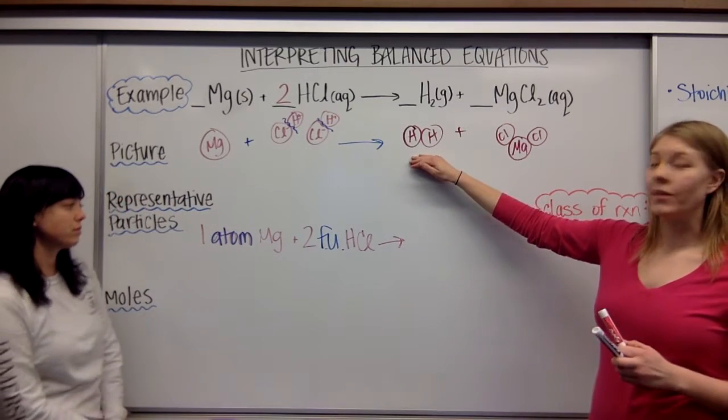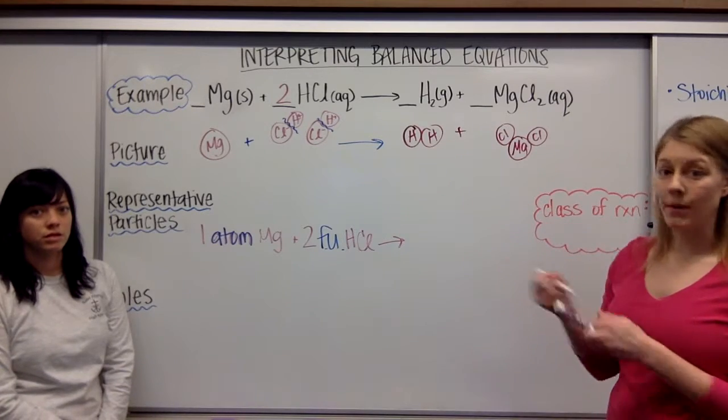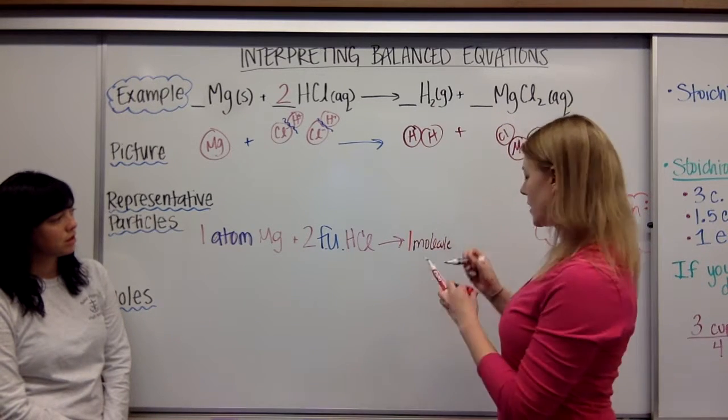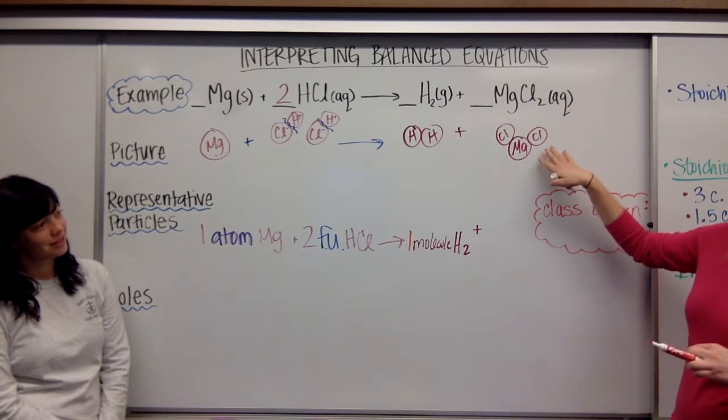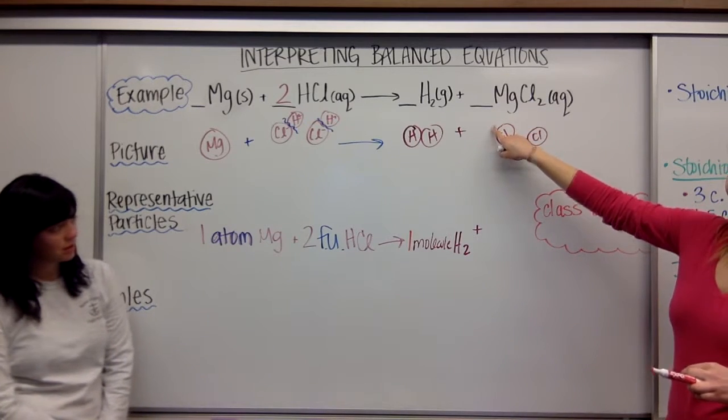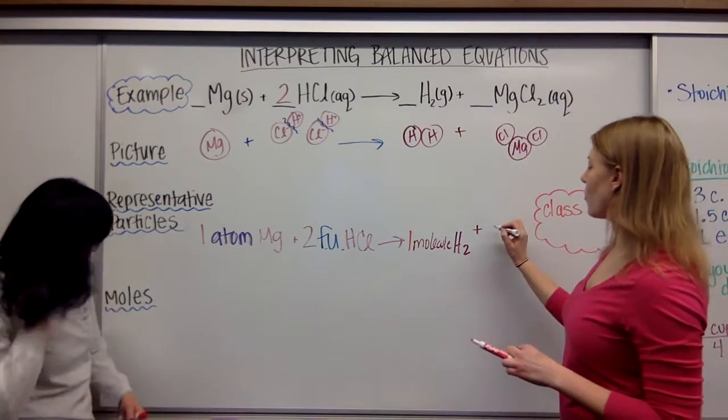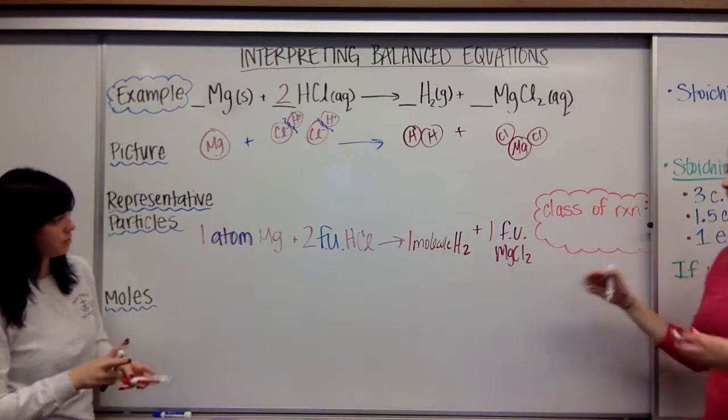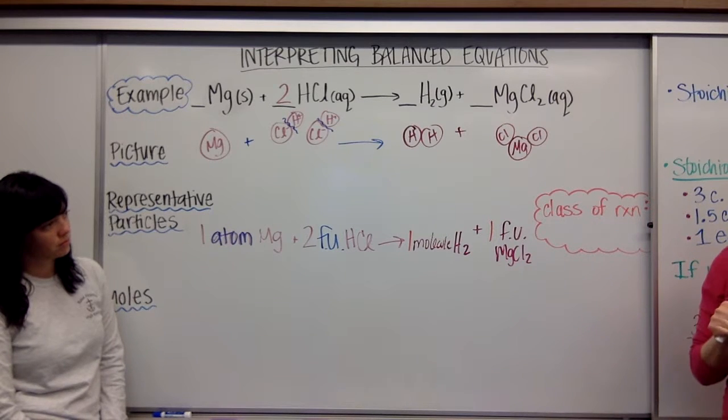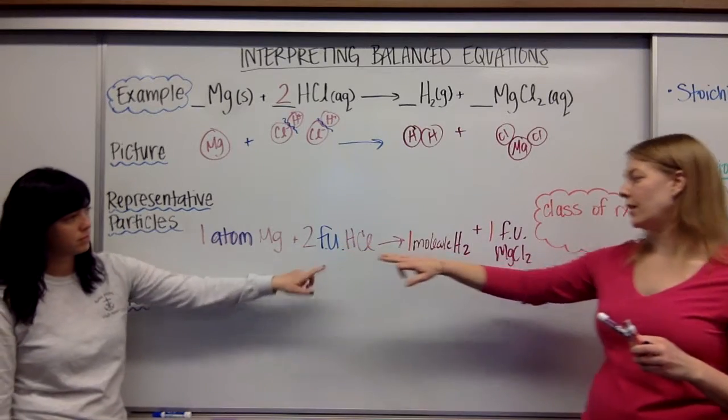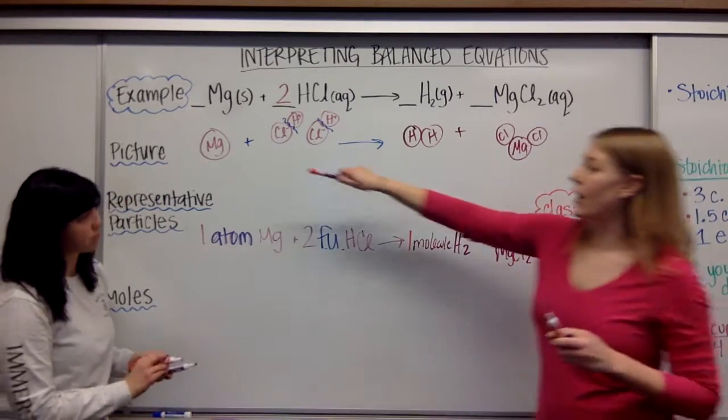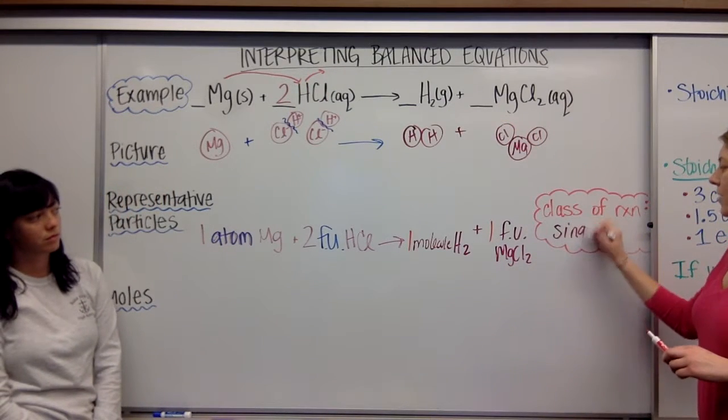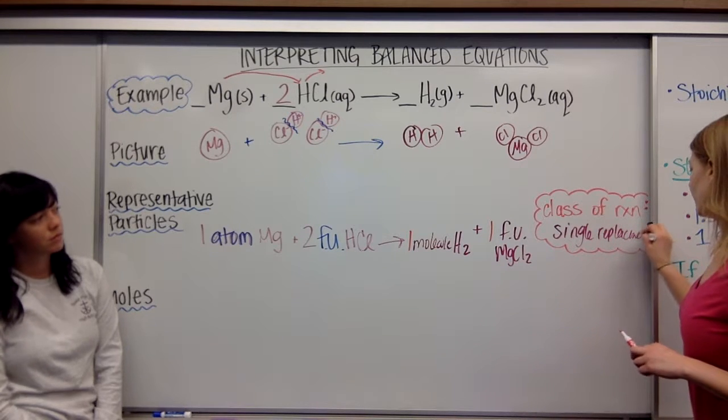Okay, plus two formula units, two formula units of HCl. Two FU, remember that's how we abbreviate formula units, HCl, hydrochloric acid, yields. All right, we have H2, remember that two non-metals bonded together, even if it's the same atom, it's going to be a molecule. So we have one molecule of H2. And we have MgCl2, right? We have one of this with a metal bonded to non-metals. This is one formula unit of MgCl2, right?